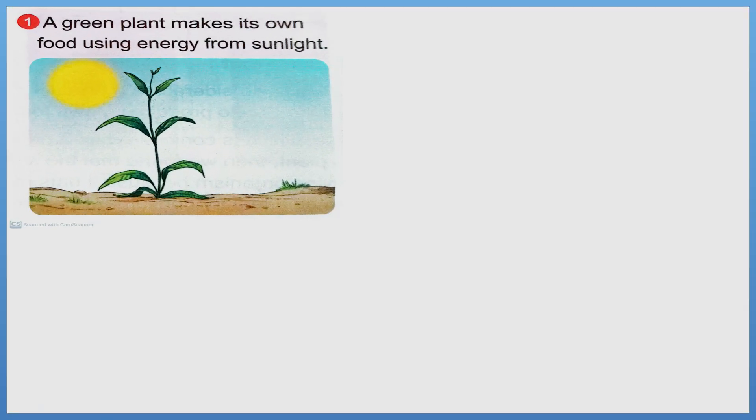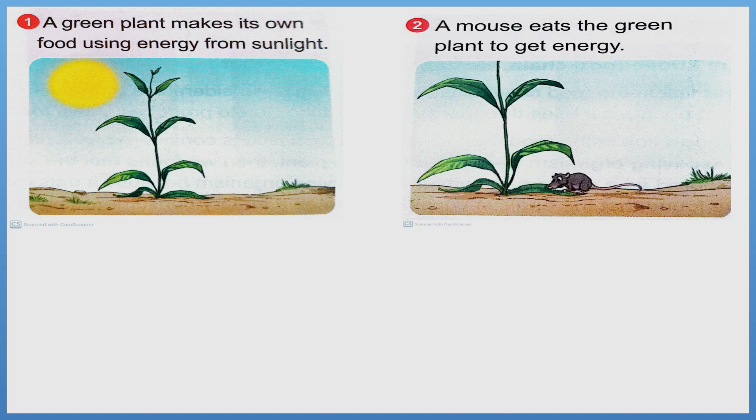1. A green plant makes its own food using energy from sunlight. 2. A mouse eats the green plant to get energy.